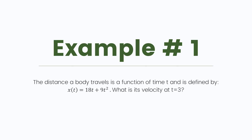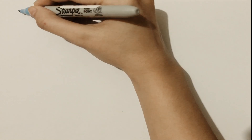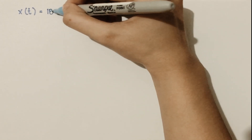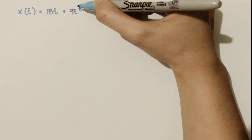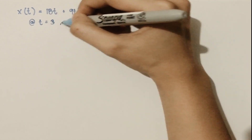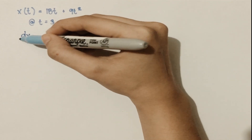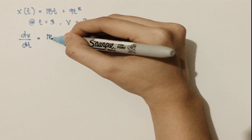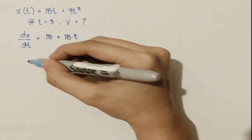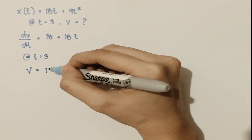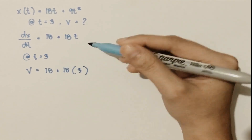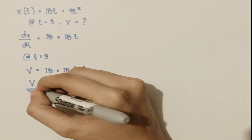The distance a body travels is a function of time t, and is defined by x of t is equal to 18t plus 9t squared. What is its velocity at time equal to 3? Given the function, we need to differentiate the equation since it is a distance equation. Therefore, we have 18 plus 18t. Substituting time equal to 3, we have 18 plus 18 times 3, so the velocity is equal to 72.